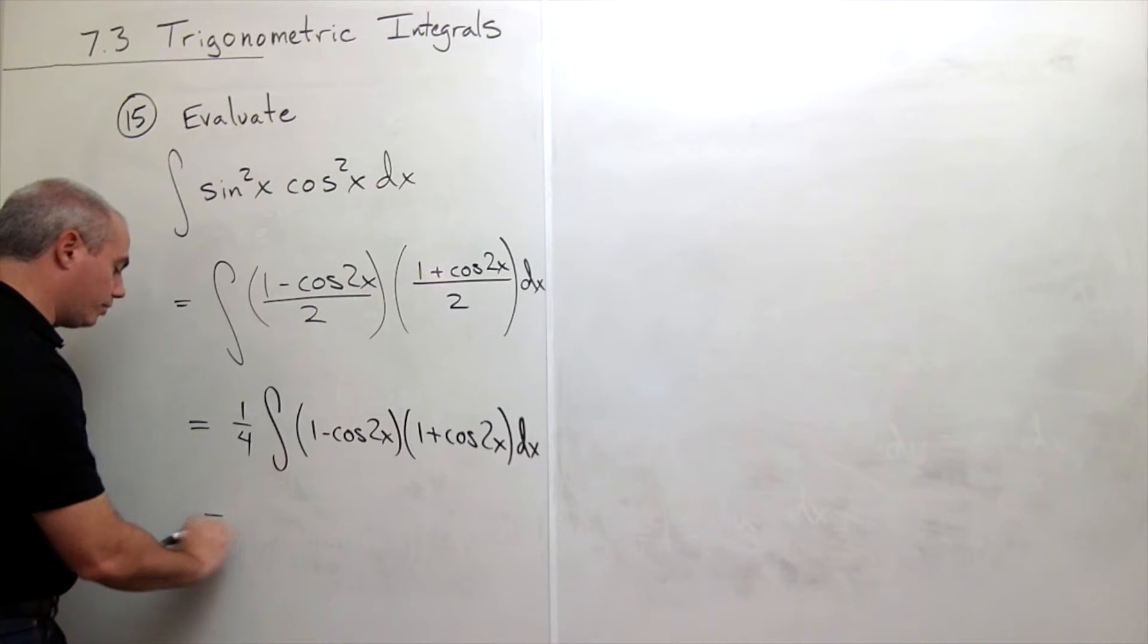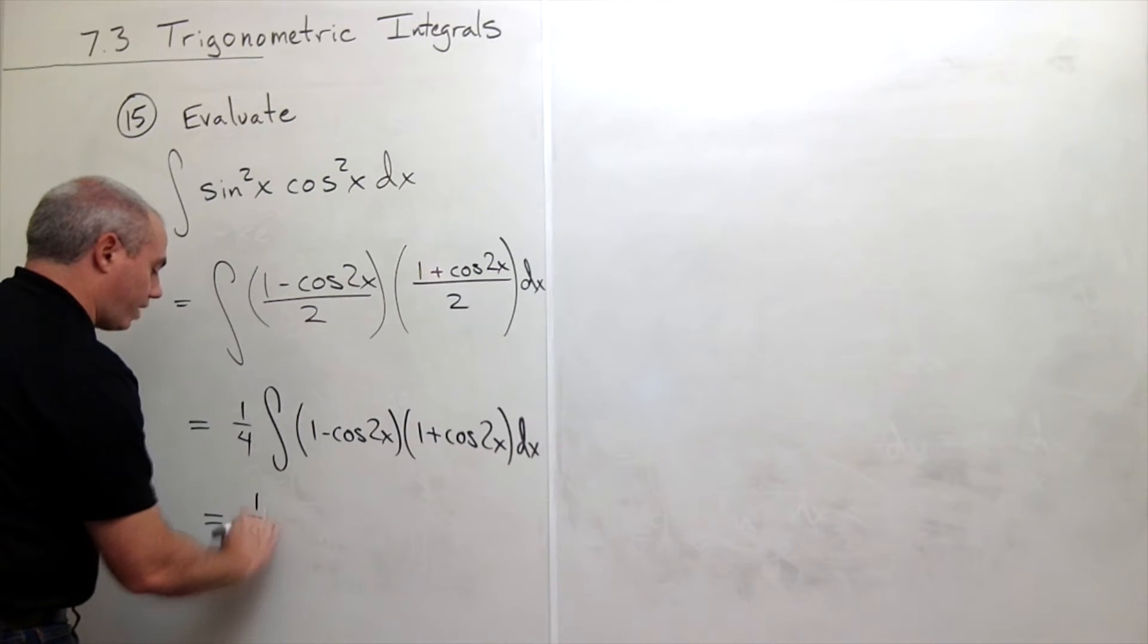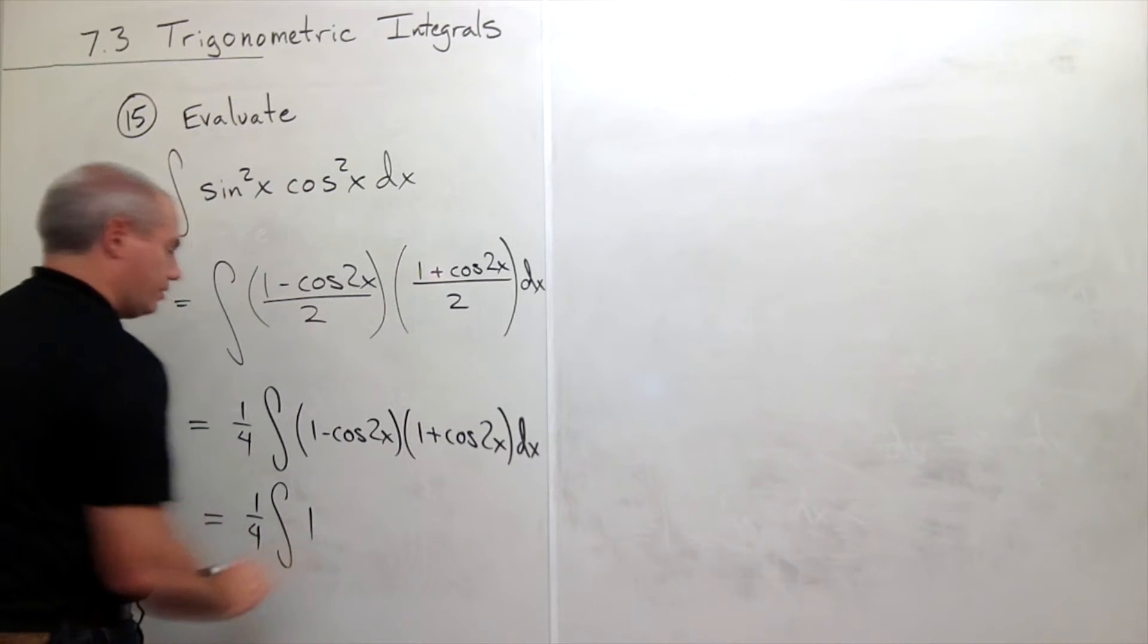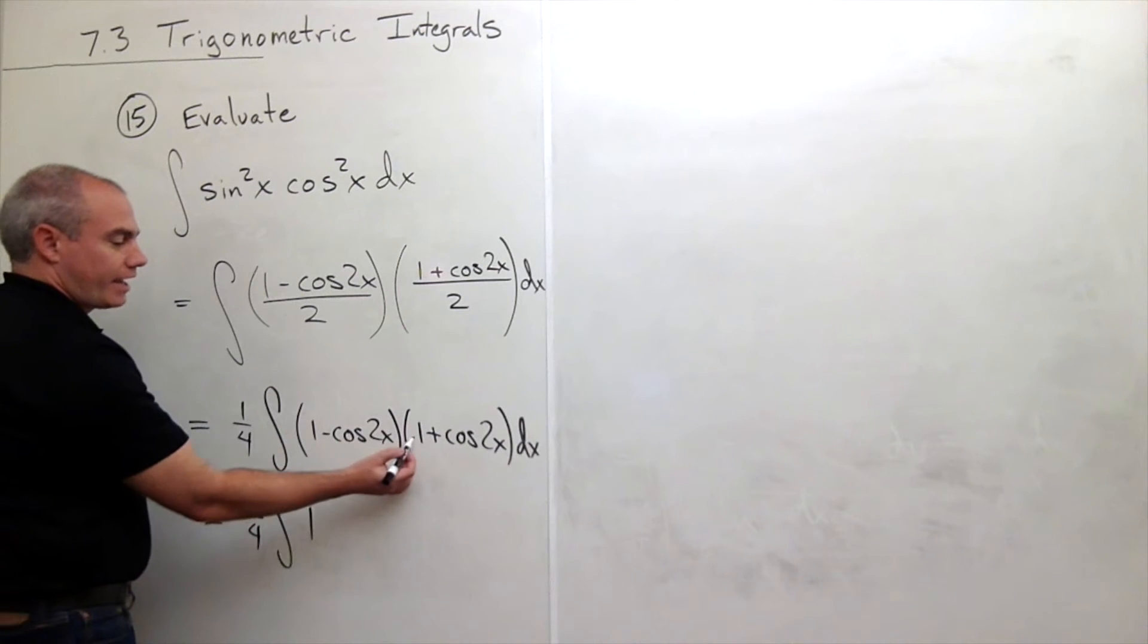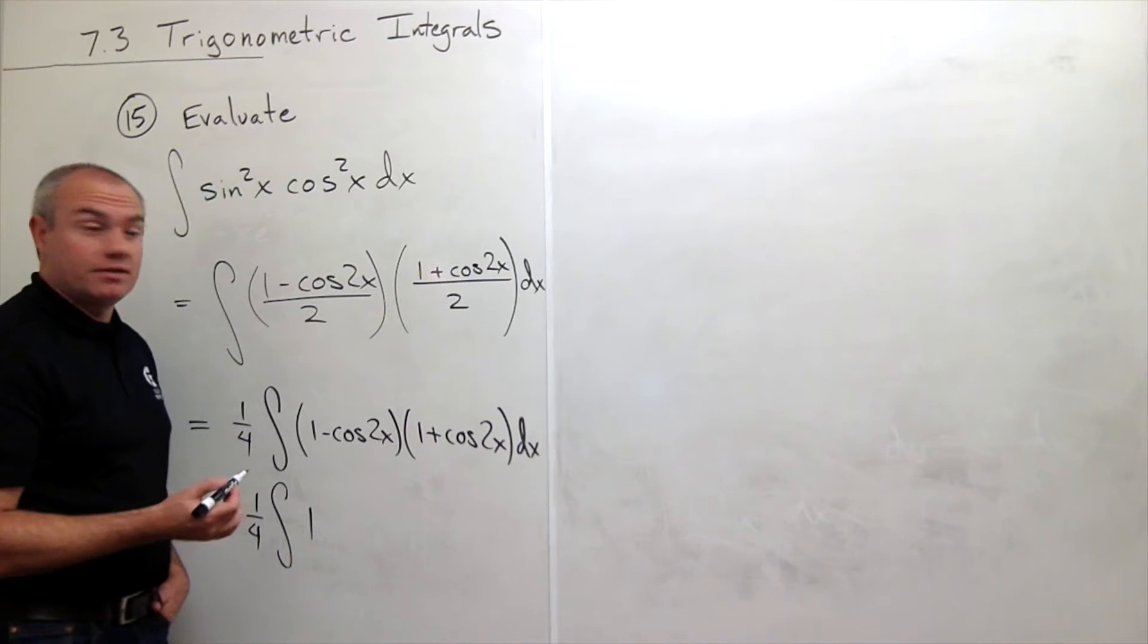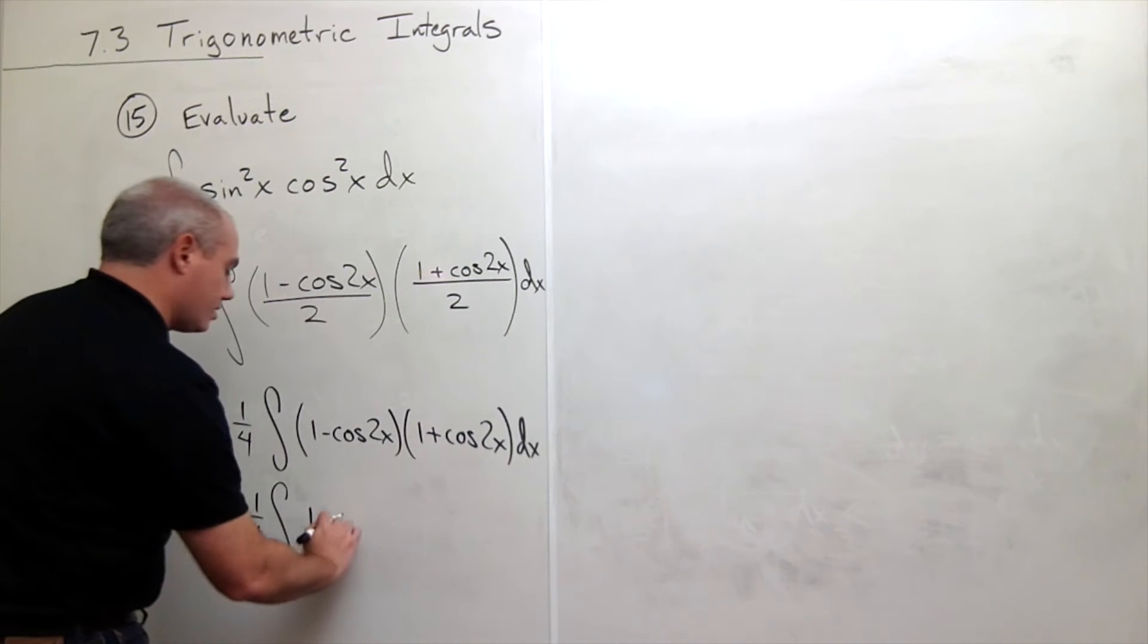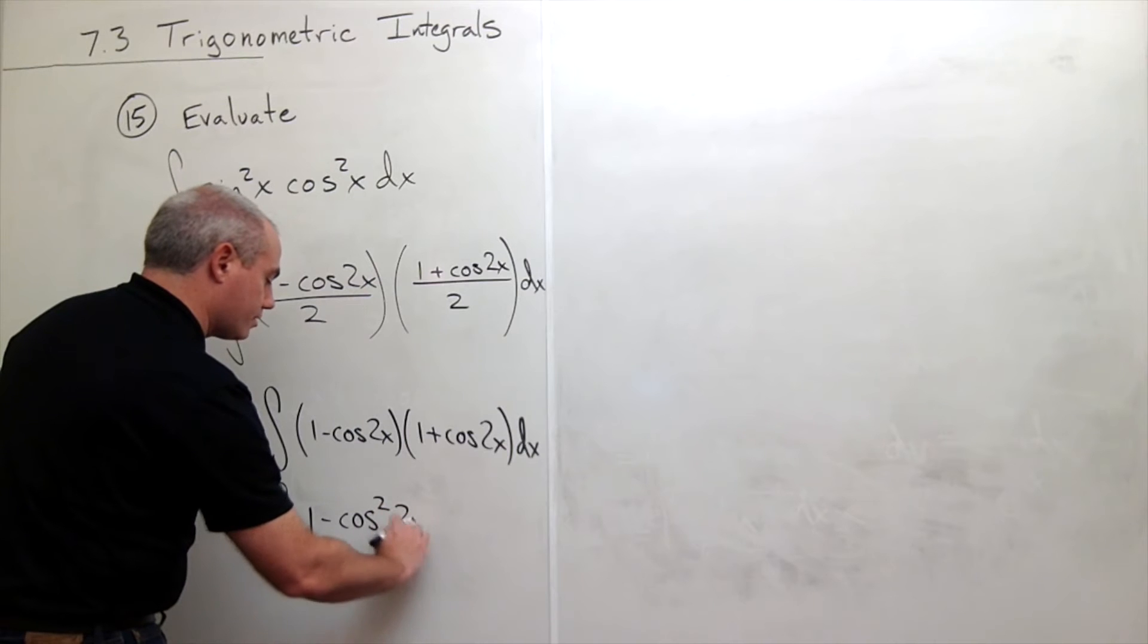Now we can multiply this out. I still have my 1 fourth out front and I have an integral of 1 times 1 is 1. And then I get 1 times cosine of 2x and 1 times negative cosine of 2x. Those two terms will cancel. And then I get negative cosine of 2x times cosine of 2x which is minus cosine squared of 2x dx.